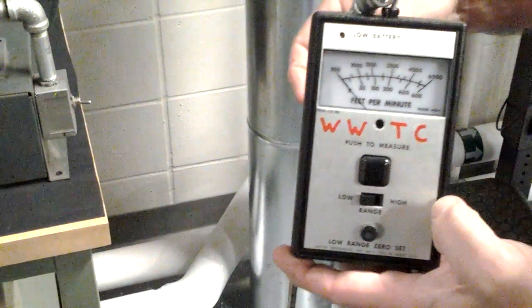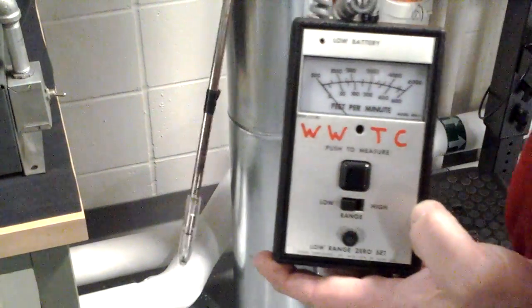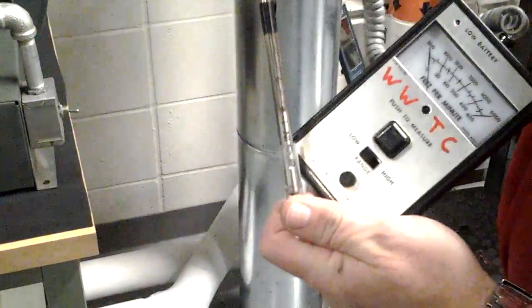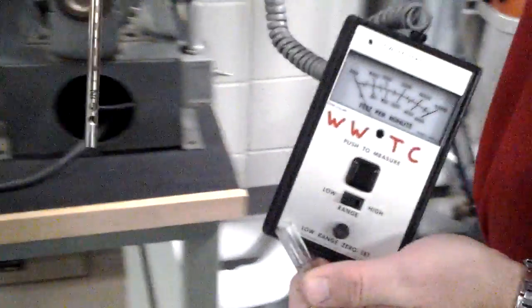The unit is now ready to take measurements. To take a measurement, remove the probe tip cover and either insert the probe into the duct through a 3/8 inch or larger hole, or hold the probe in the airstream to be measured.